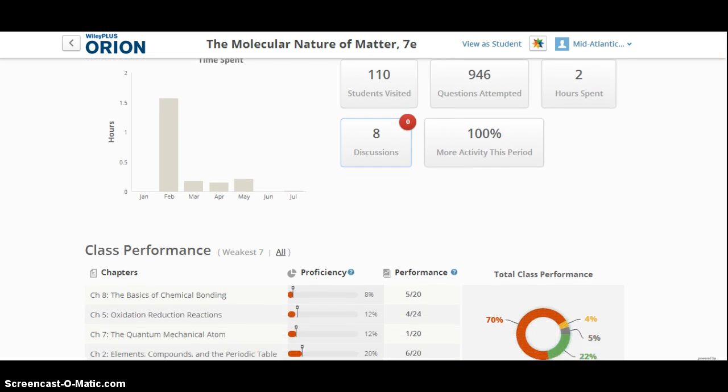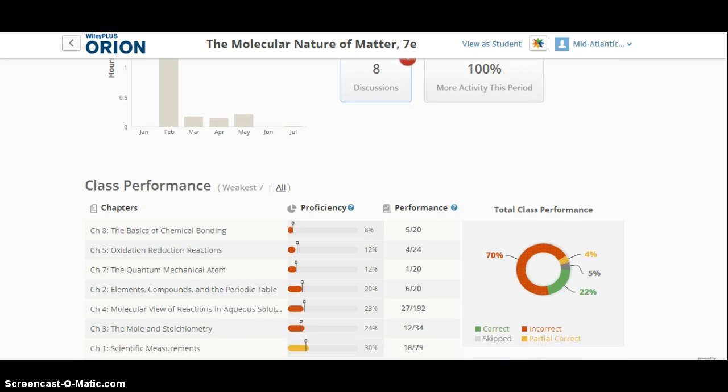Looking at the class as a whole, you can scroll down and then see that by chapter, their performance, as well as their proficiency, is displayed.